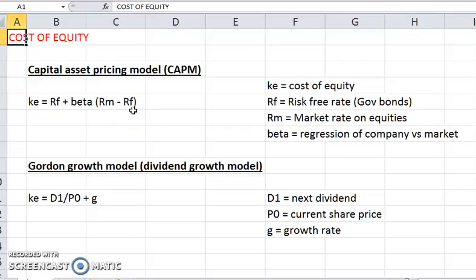So when you hear the word market premium, what it means is it's the excess of the market rate over the risk-free rate. So the market rate will always be higher than the risk-free rate, so it's just the difference between the two that's called the market premium.